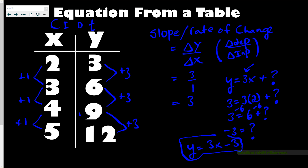That number we add on is actually called the y-intercept. But when you're first learning this, you just need to find what number makes the table work — the starting value, which is what y would be if x were zero. For example, 3(0) - 3 = -3. To check your answer on a test, pick another value: 3(5) = 15, minus 3 = 12. If it matches your table, your equation is correct.